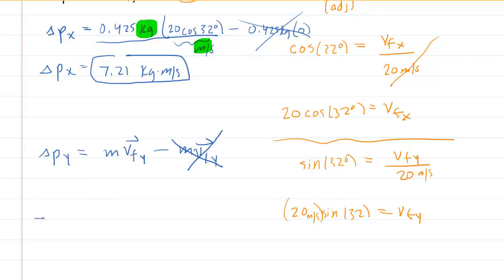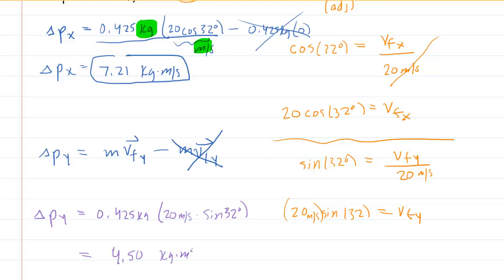Returning to our calculation, the change in momentum in the y direction equals the mass, 0.425 kilograms, multiplied by the final velocity in the y direction, which is 20 meters per second times the sine of 32 degrees. When you punch this into your calculator, you get 4.50 kilograms times meters per second. This is the correct answer for the change in momentum in the y direction, and that completes part A.